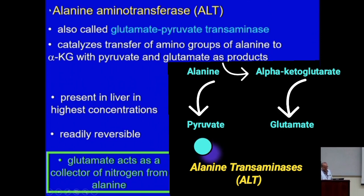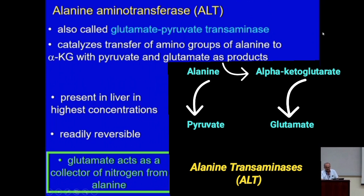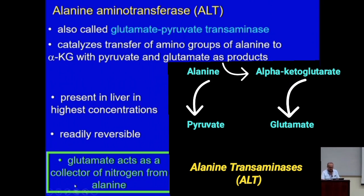This is called ALT — alanine aminotransferase, or alanine transaminase; they refer to the same thing. There are many transaminases that do the same thing as ALT, but they're specific for other amino acids. They donate their amine group to alpha-ketoglutarate, so you end up collecting a lot of glutamate as the nitrogen sink from many amino acids.